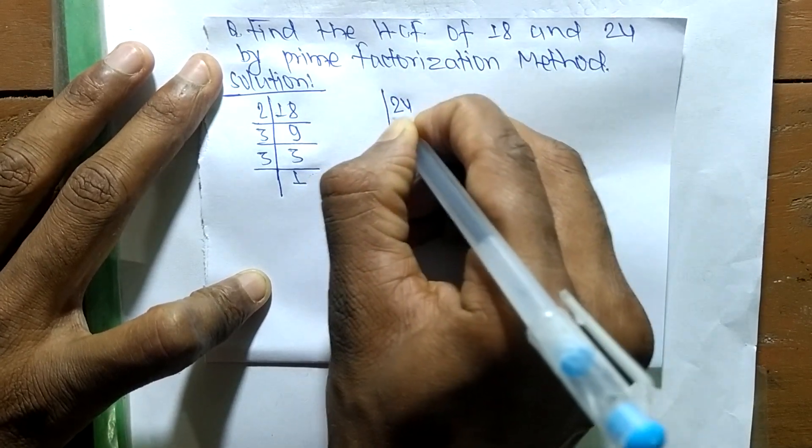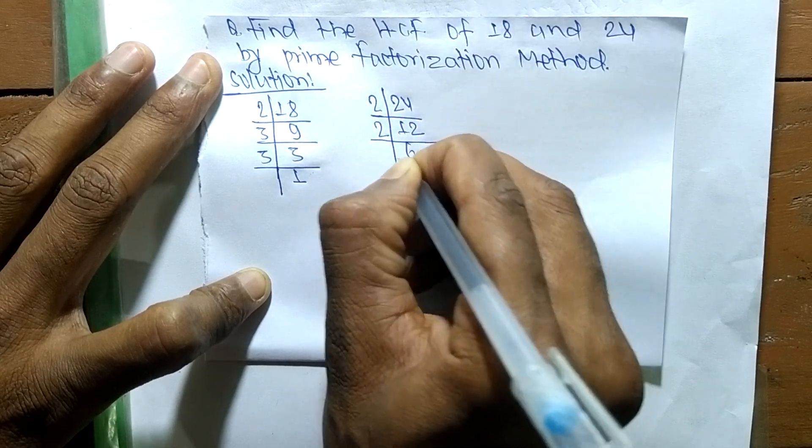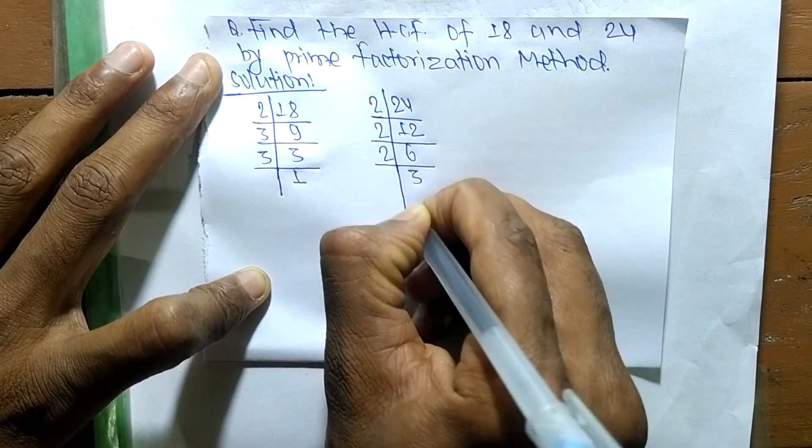In the same way, the prime factors of 24 are: 2 times 12 means 24, 2 times 6 means 12, 2 times 3 means 6, and 3 times 1 means 3.